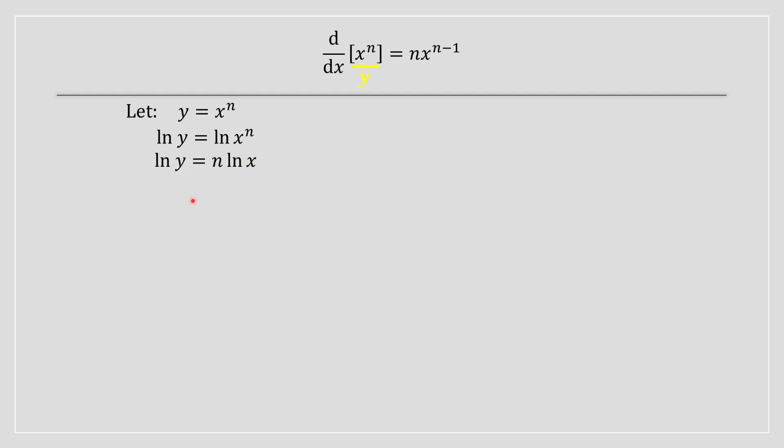Next, take the derivative of both sides of this equation. Notice n is a scalar quantity, so we can move it outside the derivative. What we're looking at is taking the derivative of ln x, which is straightforward: it equals 1 divided by x.